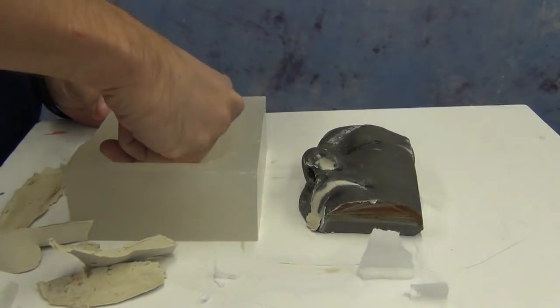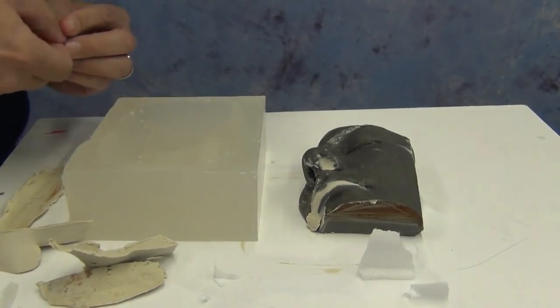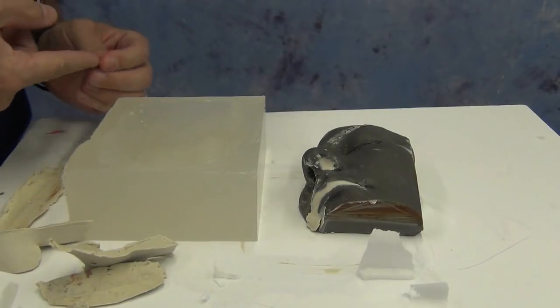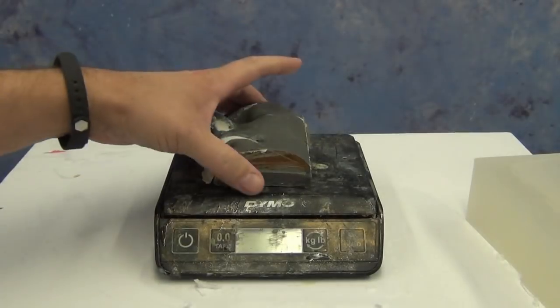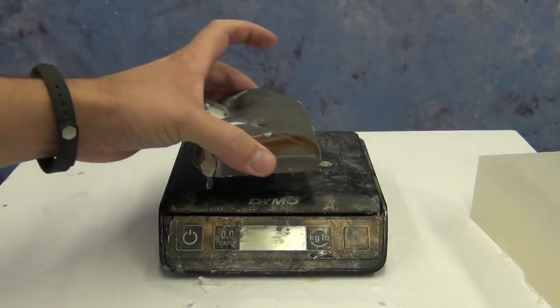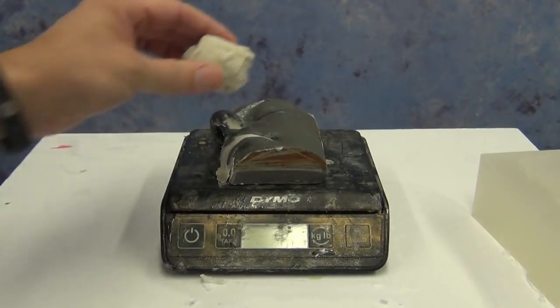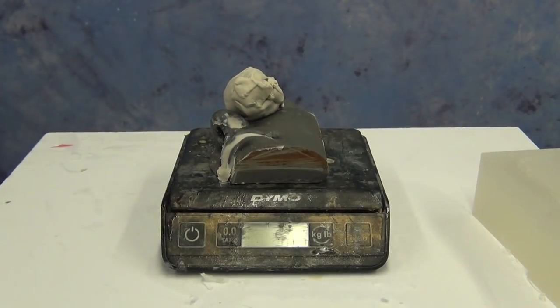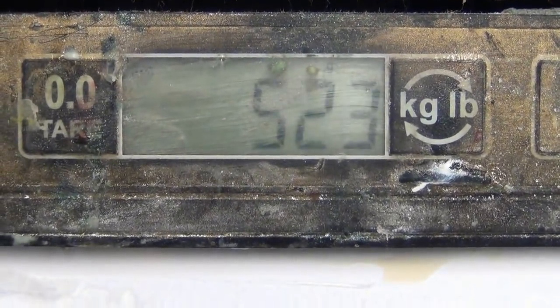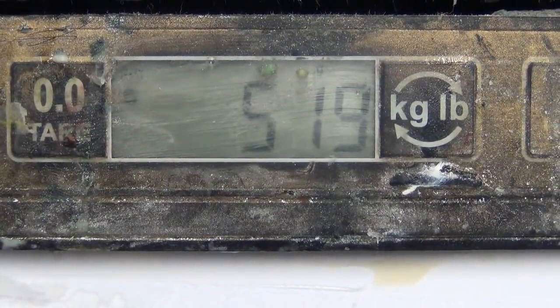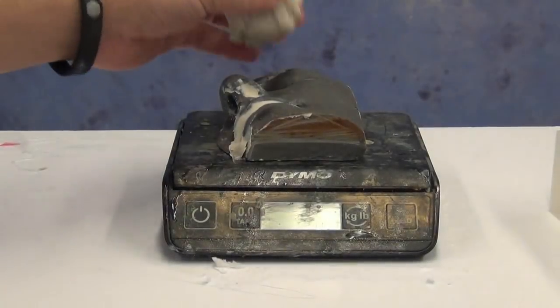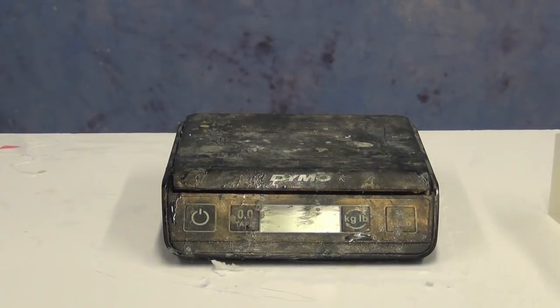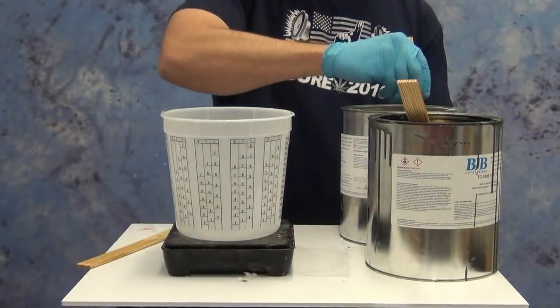So one little step here before we measure out our resin, I always like to make sure that I'm not mixing up too much resin or not enough. I'm going to weigh that pattern on my gram scale and also the additional clay that we used. That's going to give me that weight there of 519 grams. I'm going to add a little bit to that just to account for any that might stay in the mixing bucket or any other overage there. So I'm going to mix up about 550 grams total.